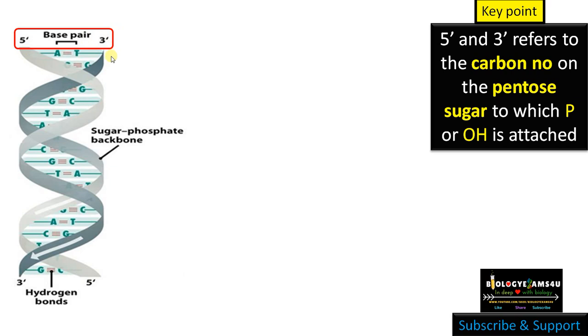Let me make it more clear. These strands, as you can see, the first strand runs in 5 prime to 3 prime direction, whereas the second strand runs in 3 prime to 5 prime direction. That's why it is called anti-parallel, not parallel.